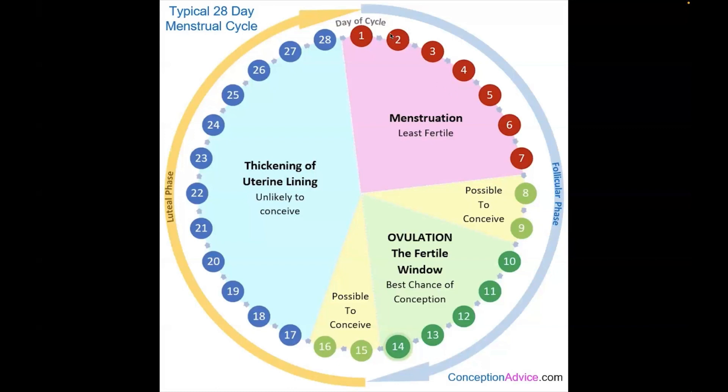There are two phases in your circle. Your cycle is divided into two: the follicular phase and the luteal phase. The follicular phase is when you have your period and your ovulation. The luteal phase is when either you're pregnant or you're not pregnant. When you're not pregnant, your body gets ready for your period. When you're pregnant, your period is not going to happen.